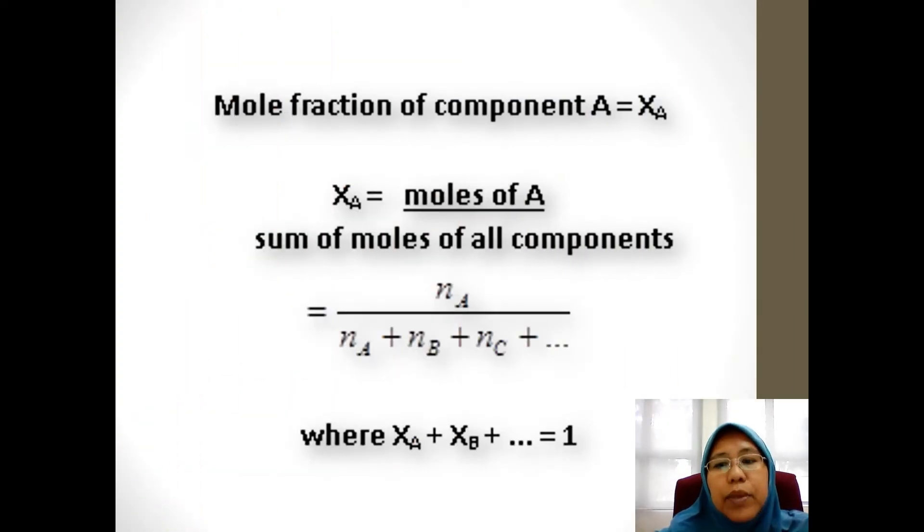The formula for mole fraction, for example, we want to get the mole fraction for A, we need to find the number of moles of A. So XA equals to the number of moles of A divided by the sum or total moles for all components.